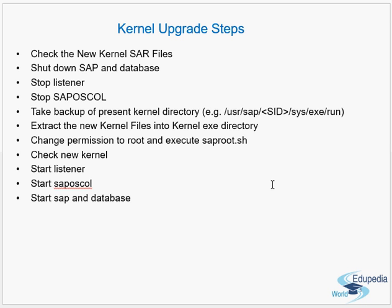After copying the new files, compare the old and new kernel directories and adjust file permissions wherever required. Another important step is to run saproot.sh using the root user ID. Then start the listener, the SAP OS collector, the database, and finally SAP — in that order. The shutdown order is the reverse: stop SAP, stop the database, stop the listener, stop OS collector.